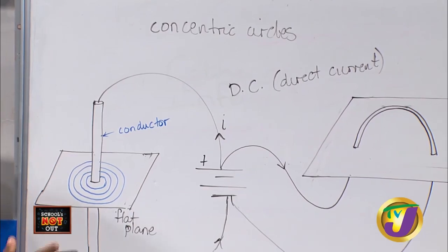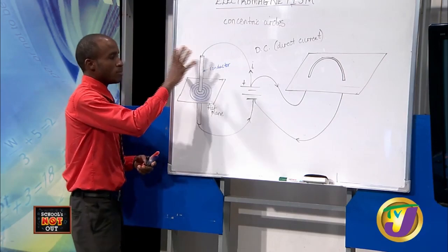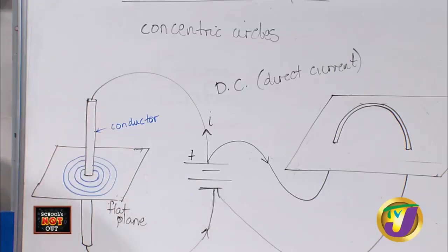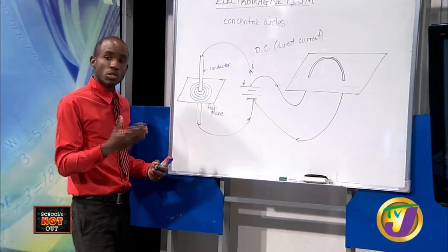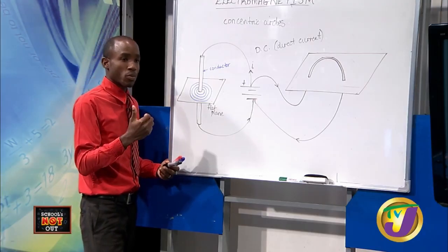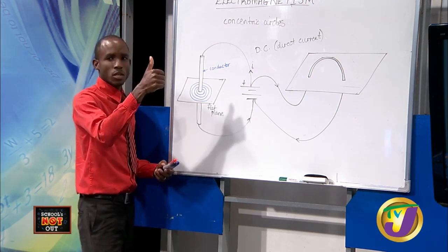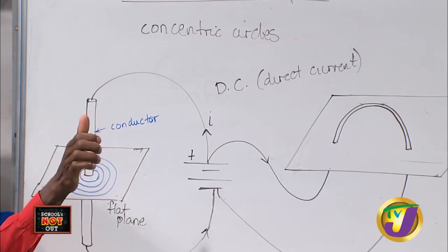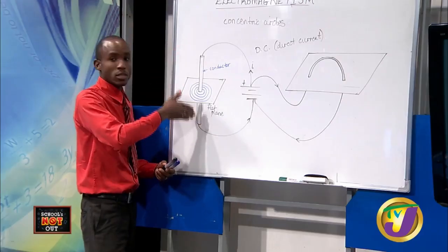Concentric circles are essentially circles of different diameters but sharing the same center, creating a pattern that looks like this. The magnetic field set up around this conductor is given by what is called Maxwell's screw rule, or the right-hand grip rule. Your thumb indicates the current flow direction, and your curled fingers indicate how the magnetic field would set up around the conductor.